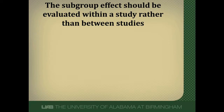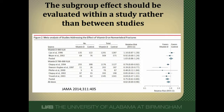Subgroup effects should also be evaluated within a study rather than between studies. This is a meta-analysis of a variety of studies looking at vitamin D and non-vertebral fractures. The subgroup that was examined was low dose vitamin D versus higher dose vitamin D. You can see in this forest plot the effects — it seems that higher dose vitamin D leads to fewer non-vertebral fractures whereas the lower dose really has no effect. Is this a real finding? Well, if you look at the different types of studies, none of them are really the same. Part of the problem is that the subgroup effects were made by looking at different studies comparing vitamin D to placebo.